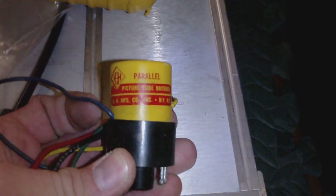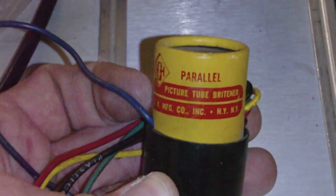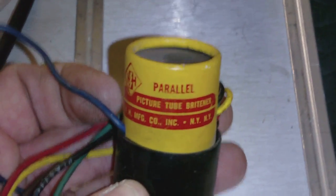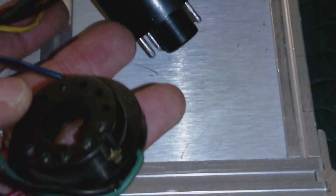I'll keep working on it here, trying to get a visible image. I also located the CRT brightener. Here it is - it says Parallel Picture Tube Brightener, and I'd be interested in hearing feedback. One side of it goes to the CRT.